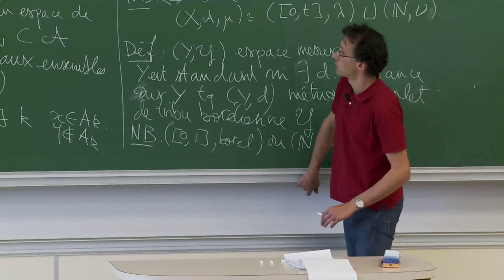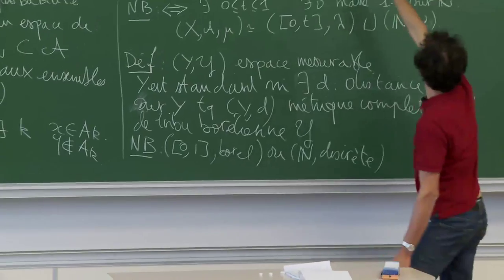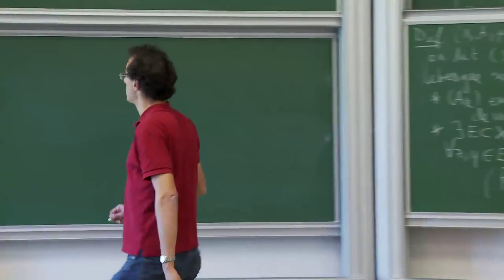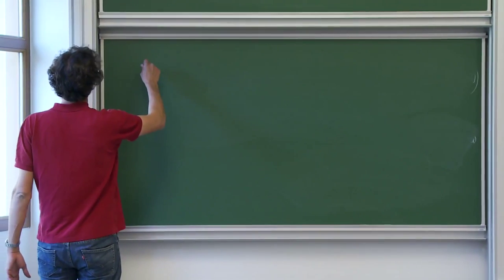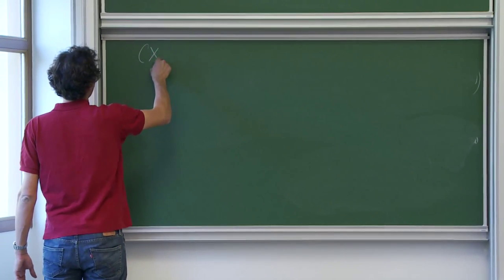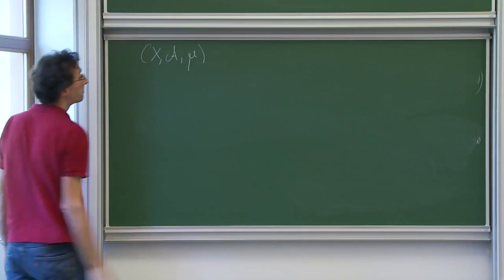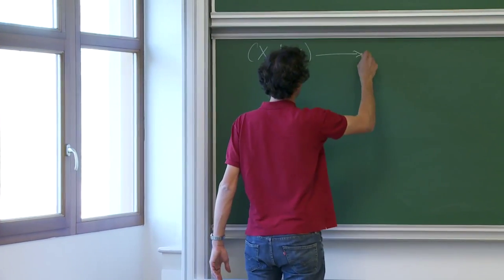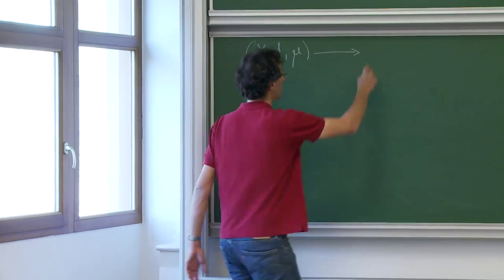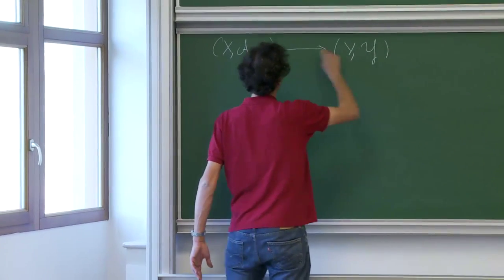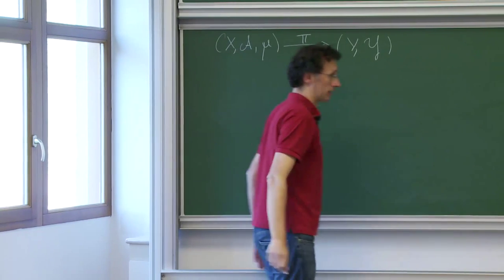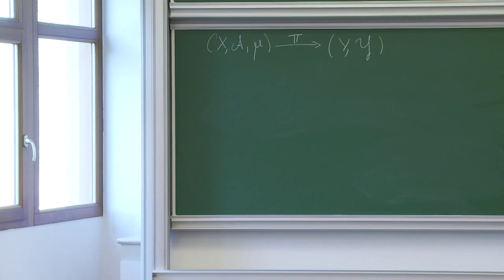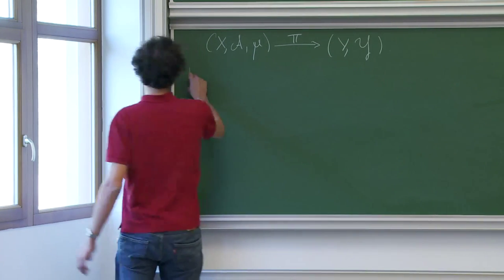Maintenant je vais voir ce que c'est que de découper une mesure. Ce que je veux dire, c'est : je vais me donner un espace de Lebesgue et couper suivant les fibres d'une application. Je vais me donner une application qui va vers un espace borélien standard. Quand j'ai cette structure, je peux découper la mesure. Le théorème, c'est le théorème de Rohlin.